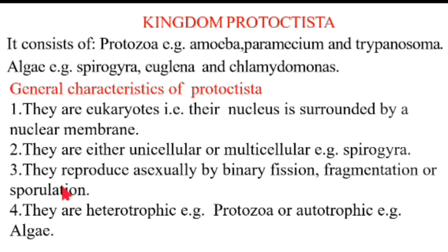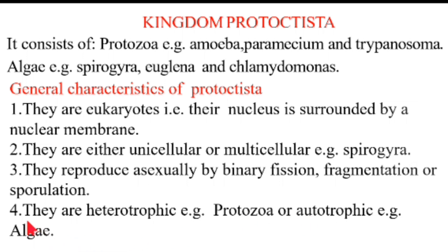Characteristic number four: they are heterotrophic, meaning they feed on already manufactured complex food substances, e.g. Protozoa. Some are autotrophic, meaning they are able to make their own complex food substances, e.g. Algae.